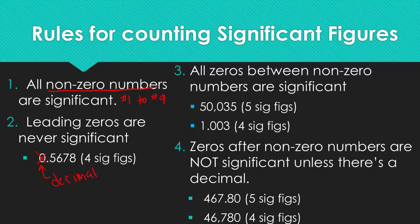All zeros between non-zero numbers are significant. So that zero and that zero in 50,035 are considered to be significant—1, 2, 3, 4, 5 sig figs. Even over here, you have 1.003. That means 1, 2, 3, 4 significant figures. Yes, so zeros sandwiched in between significant numbers—those are going to be significant.